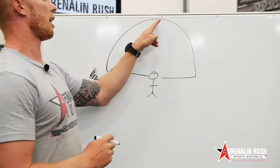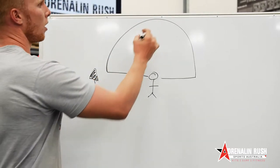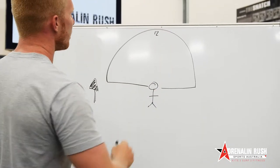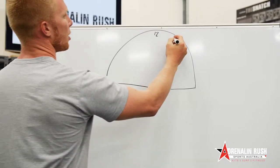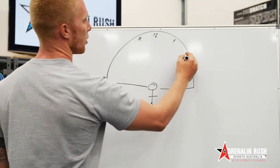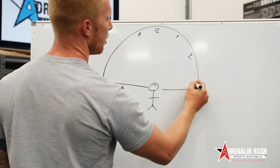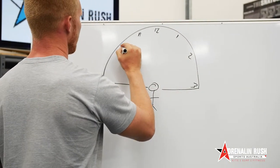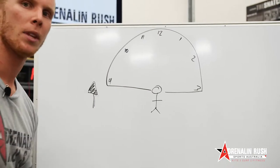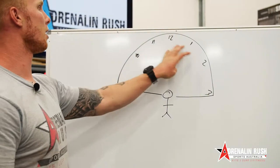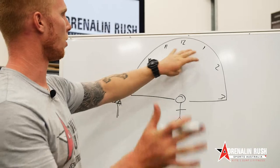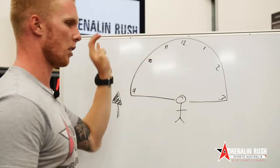Straight above our head is going to be 12 o'clock. Just to the right is 1, just to the left is 11. We've got 2, 3, 10 and 9. So 12 o'clock is directly above our head, 1 is just to the right, and 11 is just to the left.